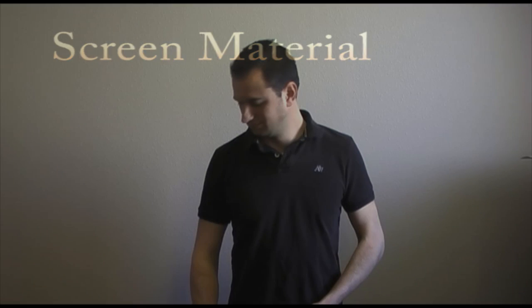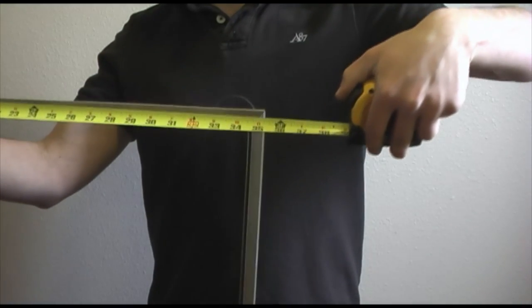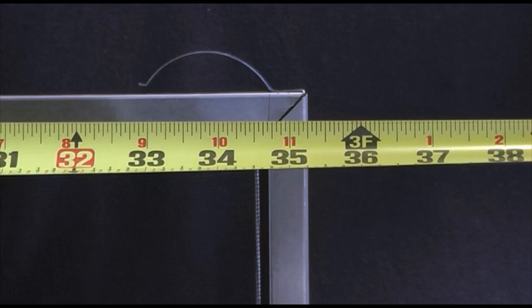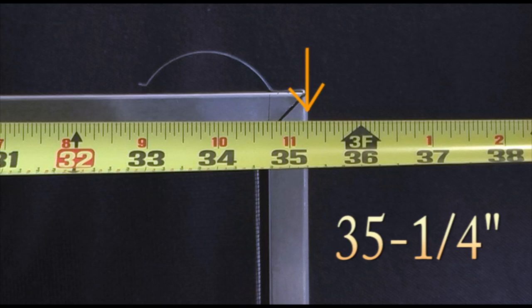First start by taking the longest side measurement of your window screen. We manufacture to the nearest fraction of an inch so you will need to provide us with the closest measurement possible. Fractions are measured in sixteenths, eighths, quarters or halves. This particular window screen measures 35 and one quarter inches.